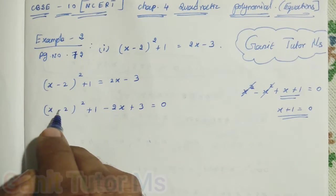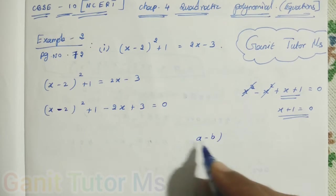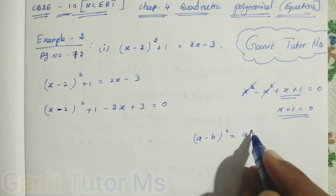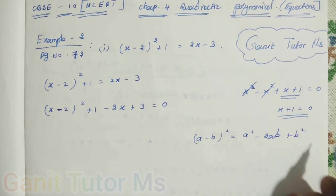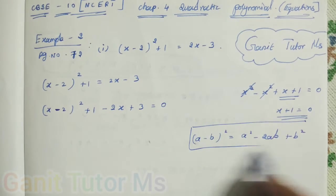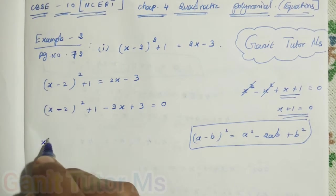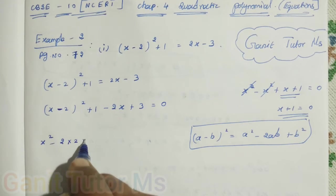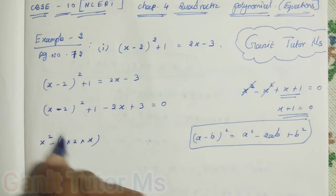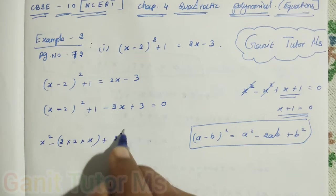The next step, x minus 2 the whole square. So, we know that identity, a minus b the whole square is equal to a square minus 2ab plus b square. So, use this identity to express the first one. So, x squared minus 2 into 2 into x, right? 2ab. So, a value x, b value 2.